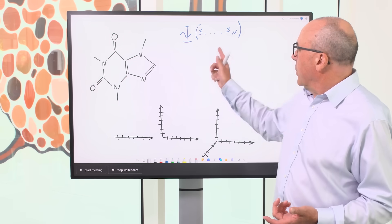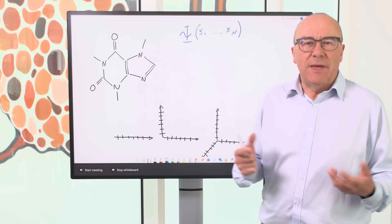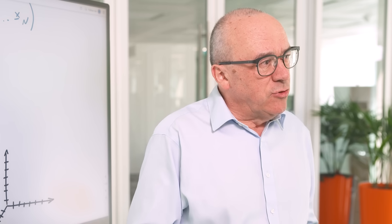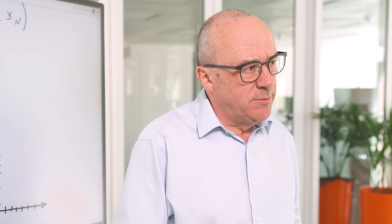By the time we get to a caffeine molecule with a 300-dimensional space, it's really out of reach. So that exponential growth makes it very difficult to solve Schrödinger's equation for anything other than tiny systems.